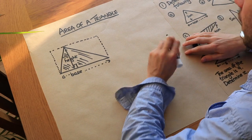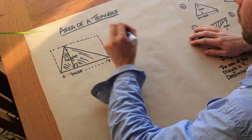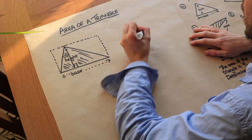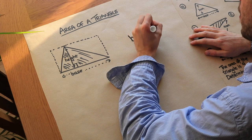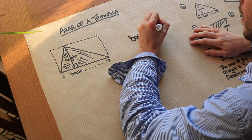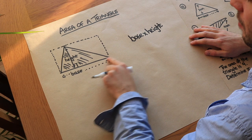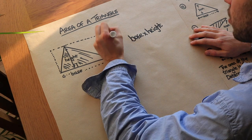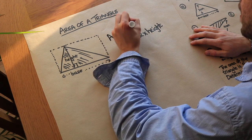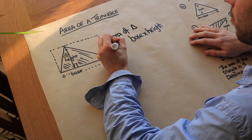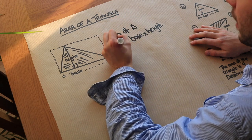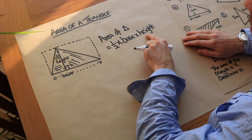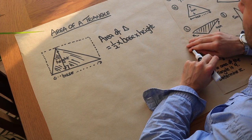We know that the area of the rectangle is base times height — just the length times the height. So the area of the triangle must be equal to half of that: half times the base times the perpendicular height.